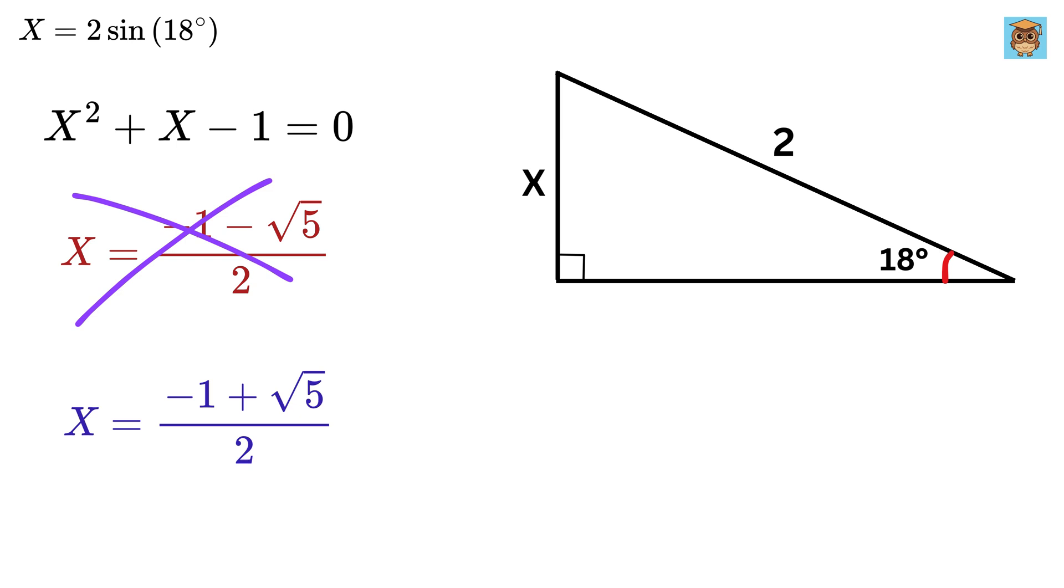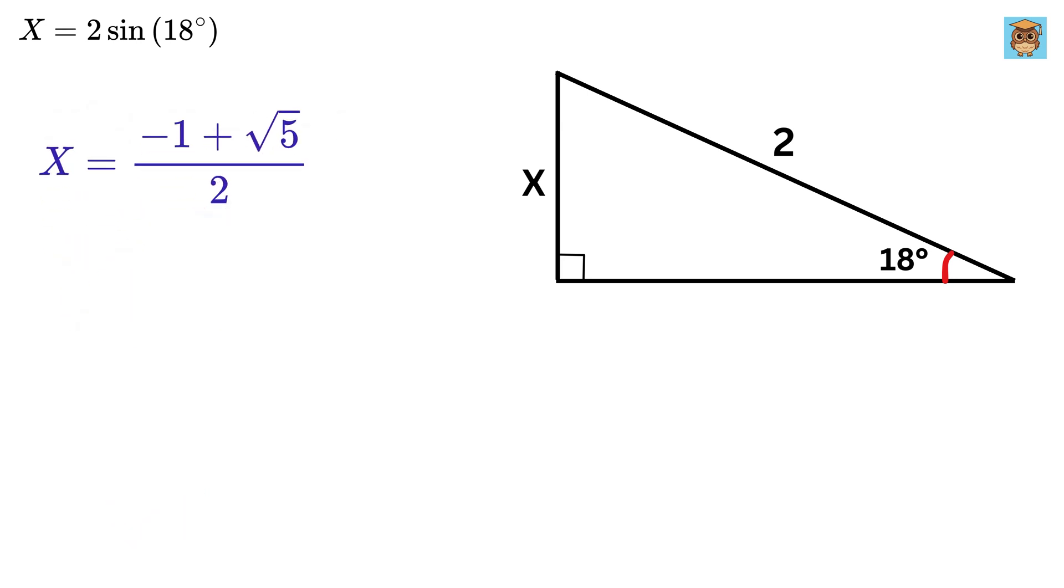And therefore x equals this. By the way, this value is just the reciprocal of the well-known number called the golden ratio, denoted by phi, which is a special number that appears in nature, art, and mathematics.